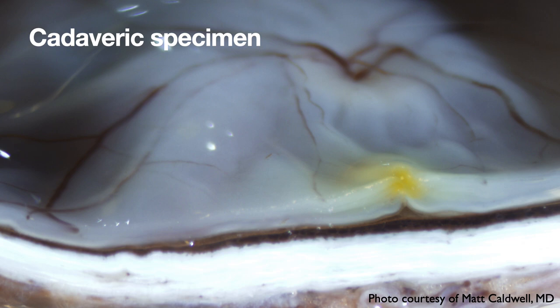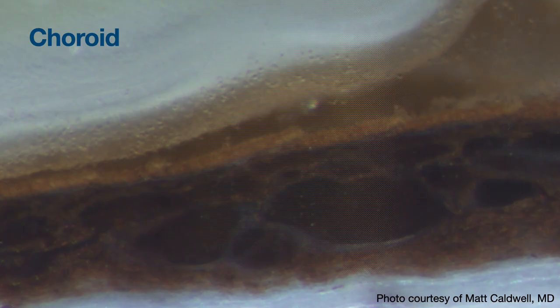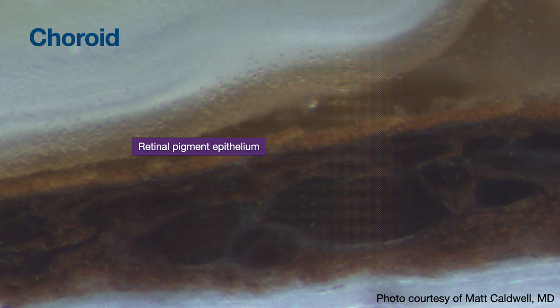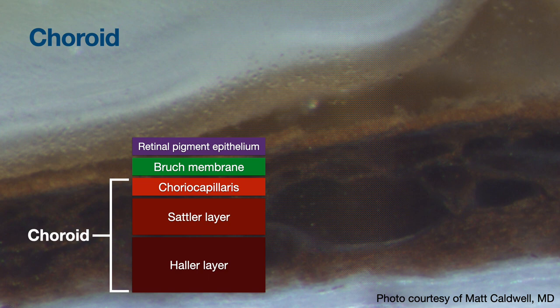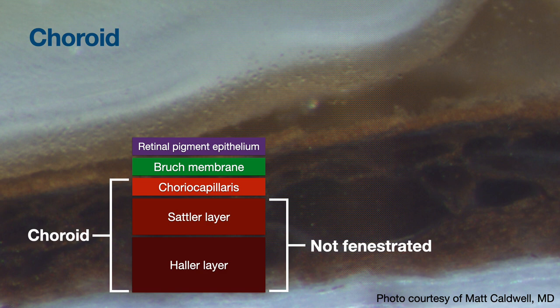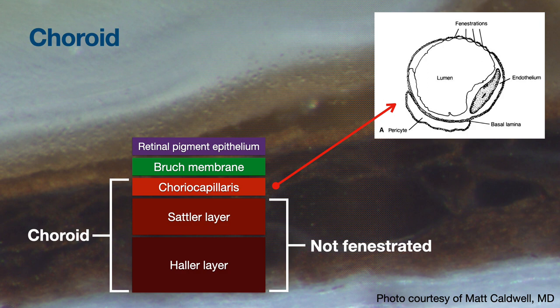This is a cadaveric specimen from Matt Caldwell. You have the RPE beneath Bruch's membrane, and then the choroid, which has three components: Haller's layer, Sattler's layer, and choriocapillaris. The short posterior ciliary arteries perforate in at Haller's layer, go through Sattler's, and reach the choriocapillaris. Those first two layers are not fenestrated and take up most of the volume. The choriocapillaris has little fenestrations — little windows — which fluorescein will be able to leak through.